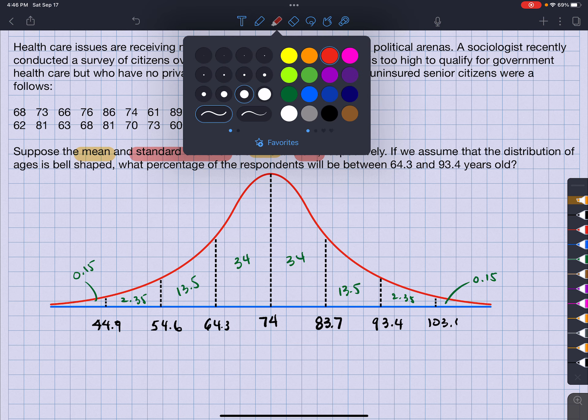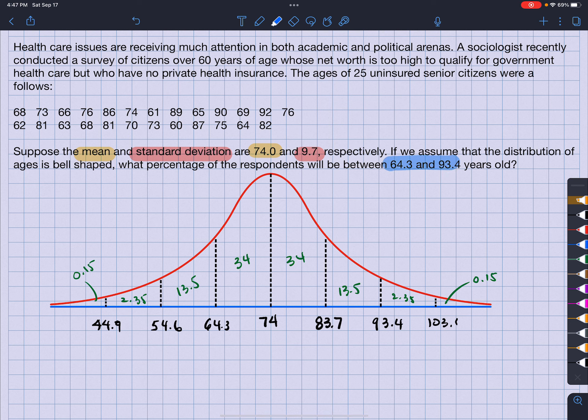So now, what are the two numbers I'm interested in? I'm interested in 64.3 and 93.4, which are right here and here. That means I'm concerned about this region in between. Everything in between there.